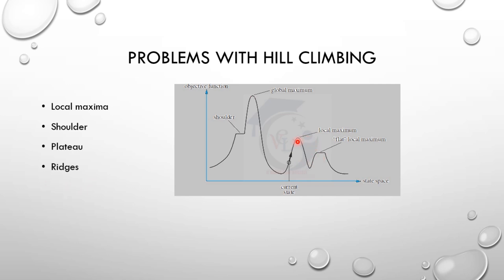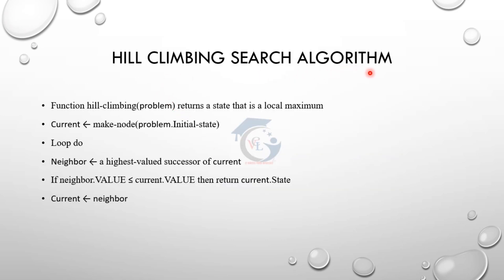Ridges — downhills are the same states. Hill climbing search algorithm: the function calls hill climbing with a problem and returns a state that is the local maximum.